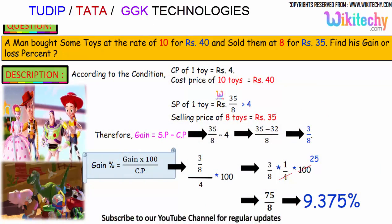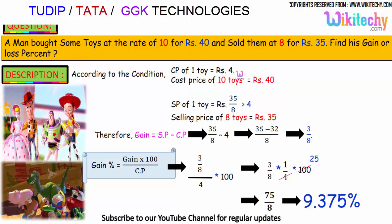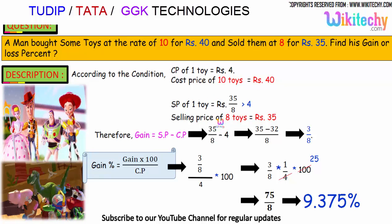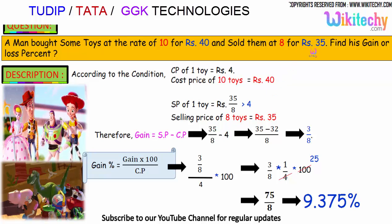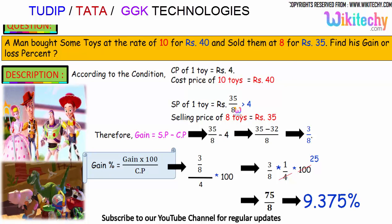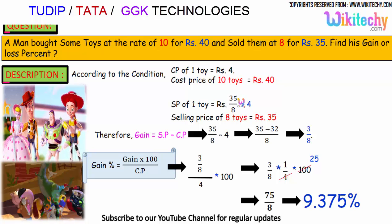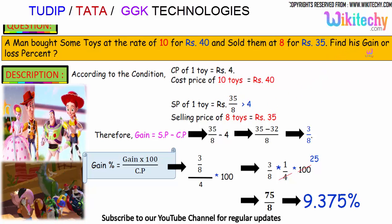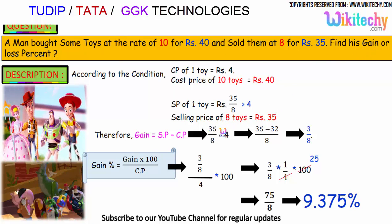According to the condition, the cost price of 1 toy is 4 rupees, so the cost price of 10 toys is 40. The selling price of 8 toys is 35, so the selling price of 1 toy is 35 divided by 8. Since that is greater than 4, it should be a gain.